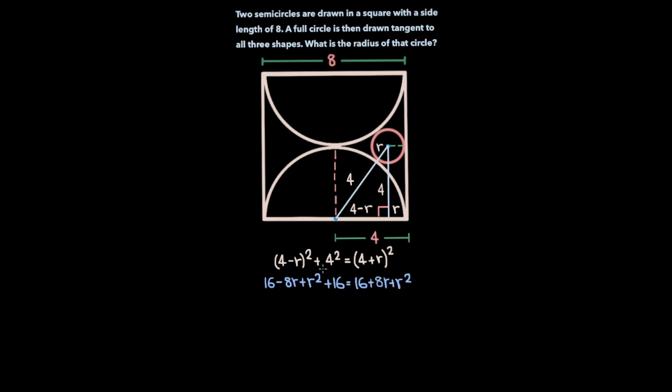Now let's simplify this expression. If we subtract r² from both sides, then this term and this term disappear, and if we subtract 16 from both sides, that gets rid of this term and this term, and now we're left with 16 - 8r = 8r. Now let's add 8r to both sides, and we'll be left with 16 = 16r.